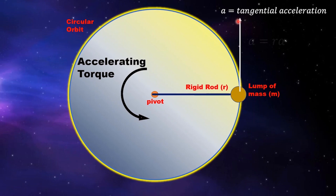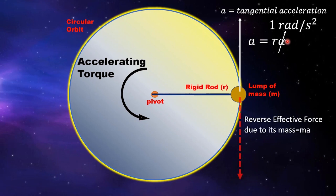Applying this torque will cause a tangential acceleration which is equal to the radius times the value of angular acceleration. The angular acceleration we are talking about here is equivalent to one radian per second squared. This tangential acceleration will produce a reverse effective force due to the accelerating mass, also known as inertia force.